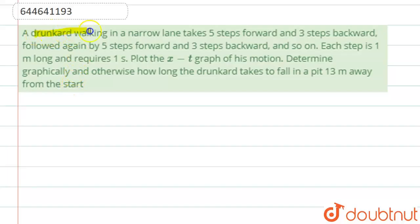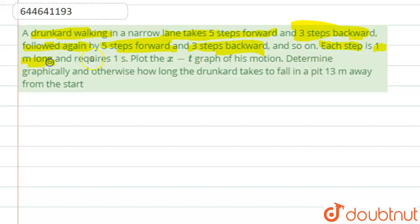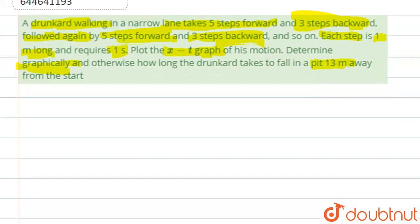Hello students. Now we're going to see this question. The question says that a drunkard is walking in a narrow lane and takes five steps forwards and three steps backwards, followed by again five steps forwards and three steps backwards. Each step is one meter long and requires one second. We need to plot the x-t graph of his motion and determine how long the drunkard will take to fall in a pit that is 13 meters away from the start.